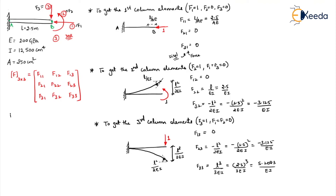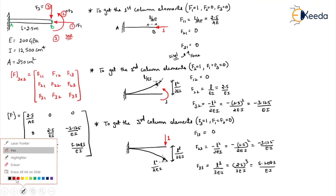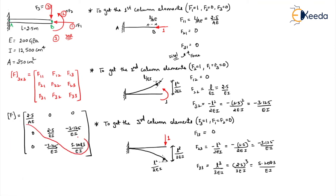Now we just fill in the values into our final matrix. The values are: first column: 2.5/AE, 0, 0; second column: 0, 2.5/EI, −3.125/EI; third column: 0, −3.125/EI, 5.208/EI. If you observe, it is a diagonally symmetric matrix, which confirms that what we have done is correct.